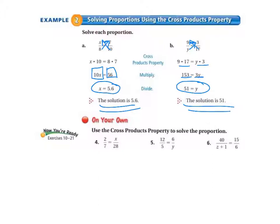Let's do the on your own problems. Copy these into your notebook and be sure you're understanding what we're doing. So number 4, we're going to cross multiply. 28 times 2 equals 56 and 7 times x equals 7x. Then we're going to divide both sides by 7 to solve for x. 56 divided by 7 equals 8. So x equals 8.